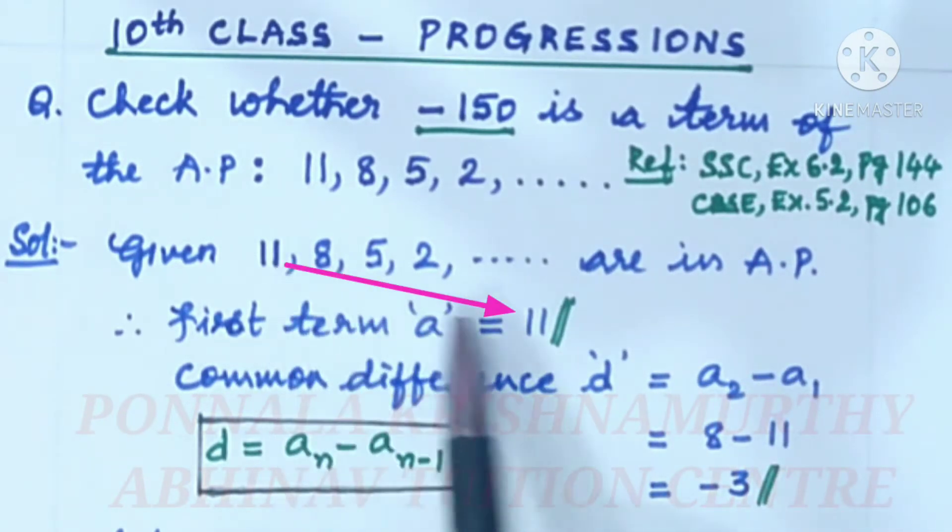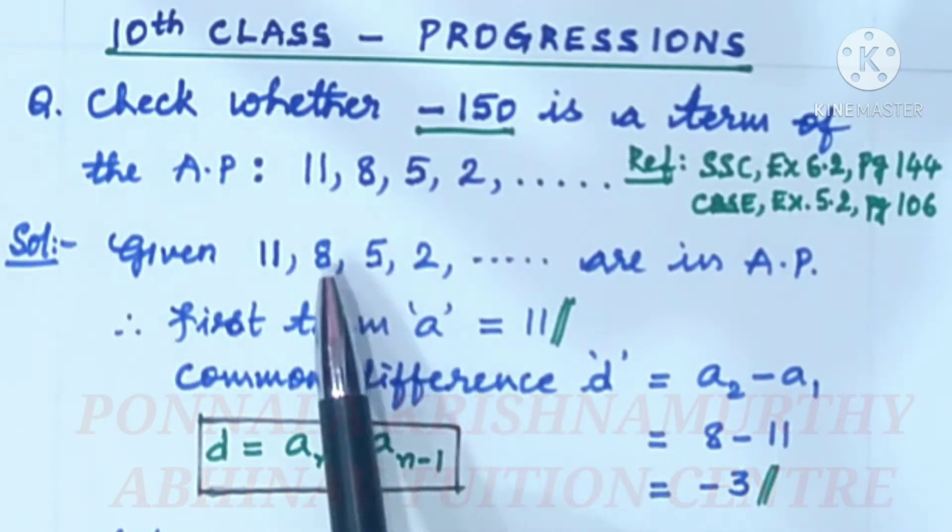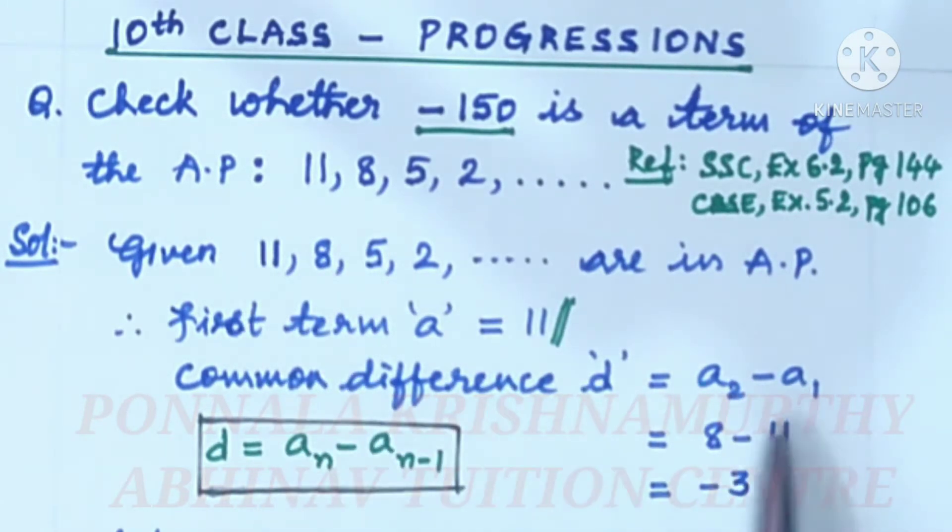First term is 11. Common difference d is a2 minus a1, that is 8 minus 11, that is equal to minus 3. We have a formula here: d is equal to an minus a n minus 1.